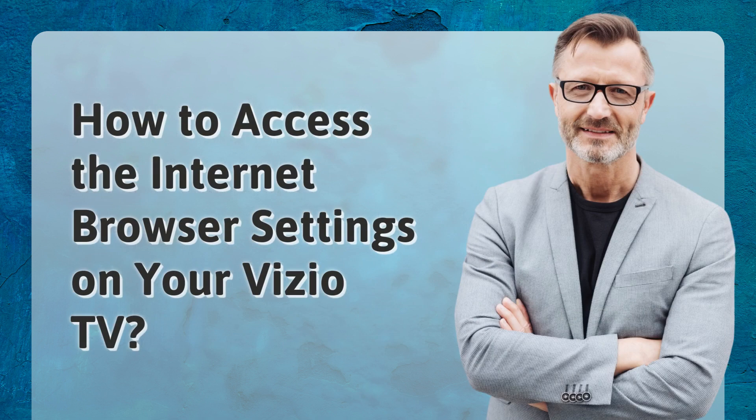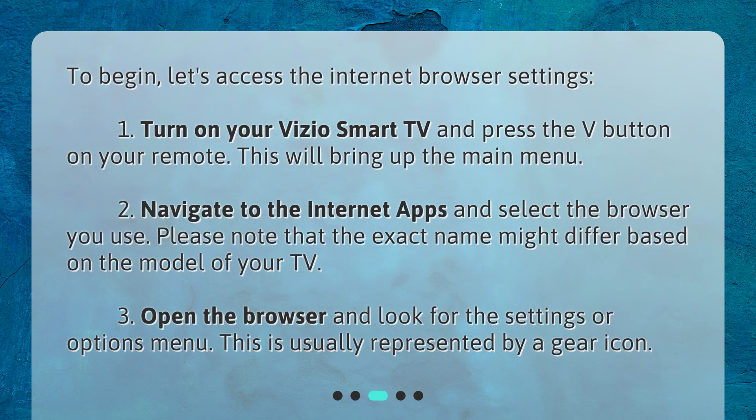How to access the Internet Browser Settings on your Vizio TV. To begin, let's access the Internet Browser Settings. First, turn on your Vizio Smart TV and press the V button on your remote. This will bring up the main menu. Second, navigate to the Internet Apps and select the browser you use. Please note that the exact name might differ based on the model of your TV. Third, open the browser and look for the Settings or Options menu. This is usually represented by a gear icon.